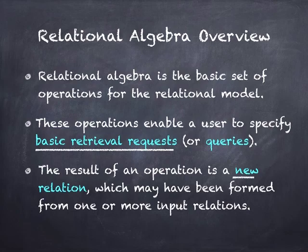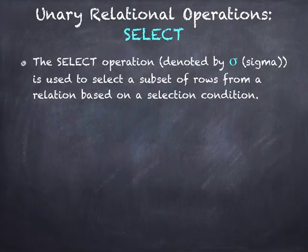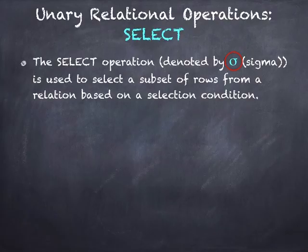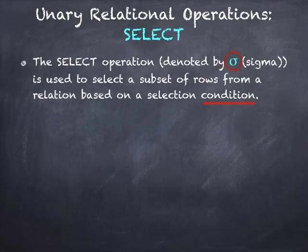The first type of relational operation is a unary operation. The selection operation is called select, and in relational algebra it is symbolized by sigma. The sigma or select operation retrieves a subset of records or rows from a table or relation based on a selection criteria or condition.